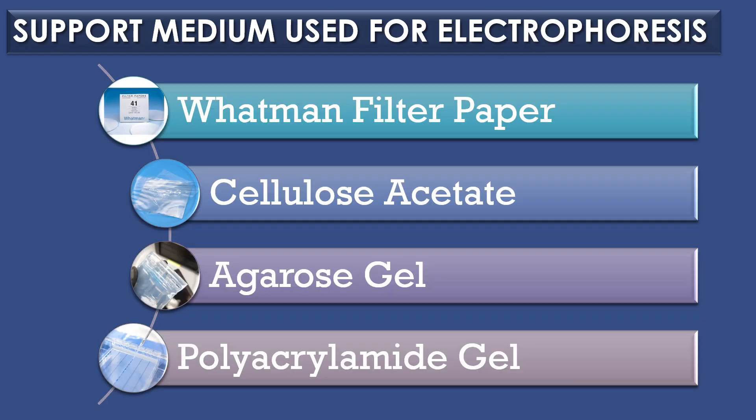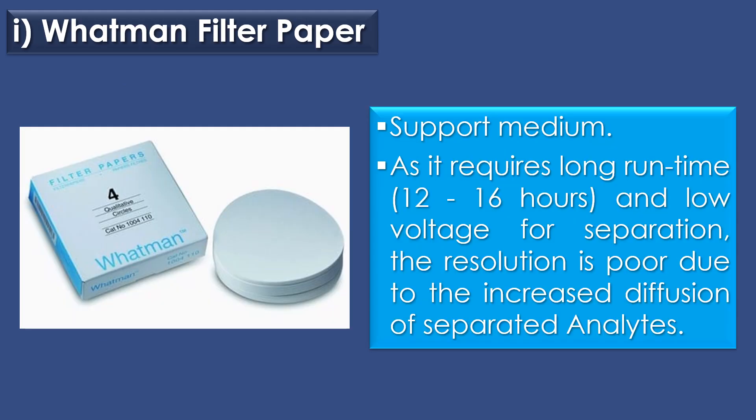Support medium used for electrophoresis: four support media are used for electrophoresis — Whatman filter paper, cellulose acetate, agarose gel, and polyacrylamide gel. The first support medium is Whatman filter paper. It requires a long running time of 12 to 16 hours and low voltage for separation. The resolution is poor due to the increased diffusion of separated analytes.